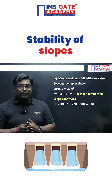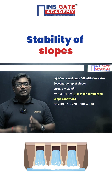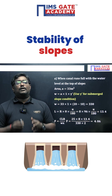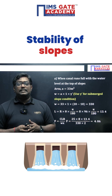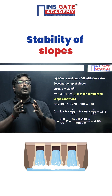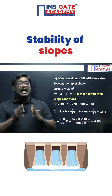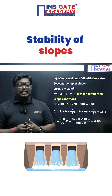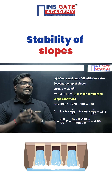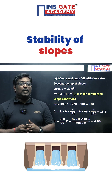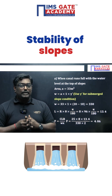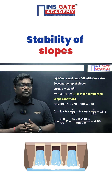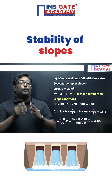After calculating the weight, the factor of safety formula is CLR upon W into x̄, where x̄ is the centroid distance, W is the weight, C is the cohesion, and L is the length of the arc, substituting R into theta. By substituting these values, we get a factor of safety of 4.06.